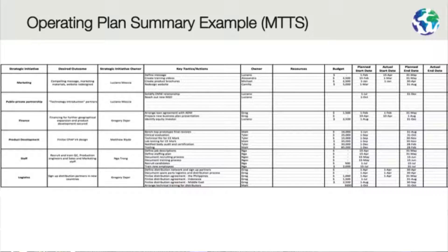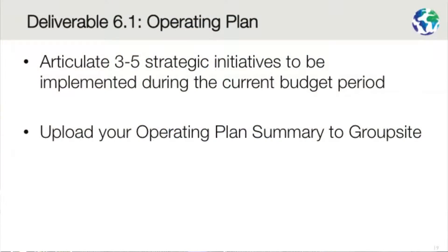They are also using columns to track if they stay on target for these dates. So the deliverable for this module, 6.1 Operating Plan, is to articulate three to five strategic initiatives to be implemented during the current budget period. We want you to upload the Operating Plan Summary to GroupSite. That's the deliverable for 6.1.